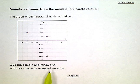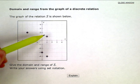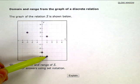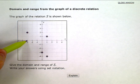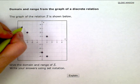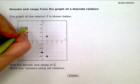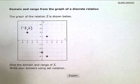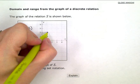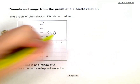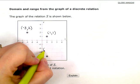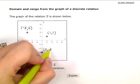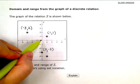So I have a discrete relation, meaning I have individual separate points here. So the coordinates of these points are negative 3, 2, 1, 1, 0, negative 3, and 1, negative 4.